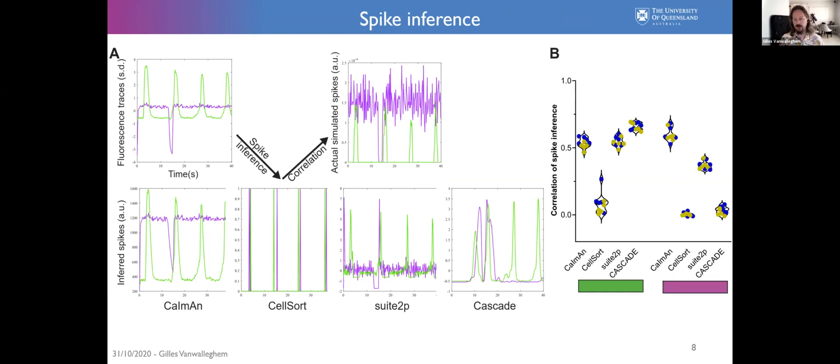And finally, spike inference. On the activated neurons, most of the tools do fairly well except CellSort, but it's a fairly old algorithm. Cascade with the universal model does very well on this, better than the other ones. However, if you look at the inhibited neurons, you see that the performance of Cascade collapses. Suite2P does not do as well. Caiman with the FOOPSI implementation does fairly well. That's something that we discussed with Peter quite a bit. I'm thinking of training some models with the inhibited neurons, but we're still ironing that out with Peter, a couple of problems when we try to make a universal model that includes the inhibited neurons.